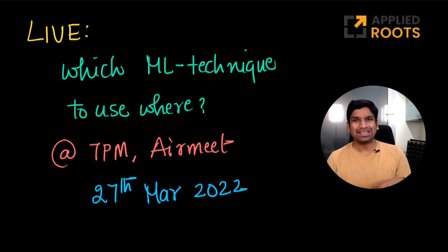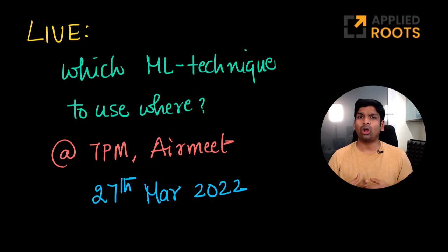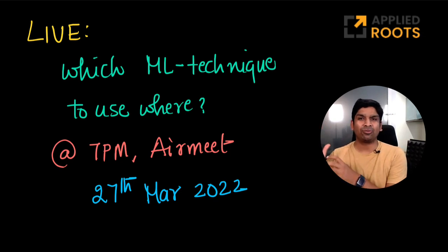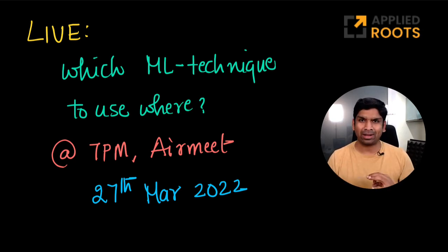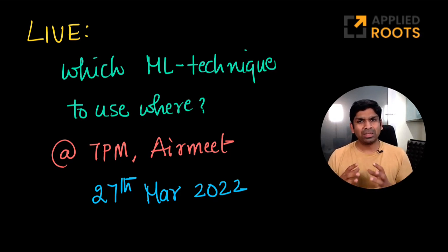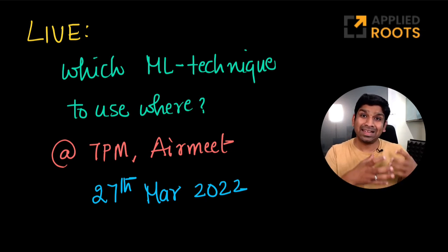The live session discussion topic today is which machine learning or deep learning technique to use where. Throughout our courses we learn a lot of concepts, from the simplest k-nearest neighbors and Naive Bayes techniques to state-of-the-art transformers, BERT, and GPT-based models for NLP. One place where a lot of our learners get confused is which technique to use where. Sometimes you might have to experiment with multiple techniques, but there are basic rules of thumb based on what typically works in the real world, the type of data, and the properties of the data or problem.